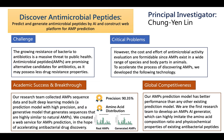Our research group developed AI models to predict and generate antimicrobial peptides. In recent years, we humans face a great challenge as the resistance of bacteria to antibiotics is growing. Antimicrobial peptides are promising candidates for antibiotics. However, the cost and effort of antimicrobial activity evaluation are formidable. So, to accelerate the process of discovering AMPs, we developed the following technology.